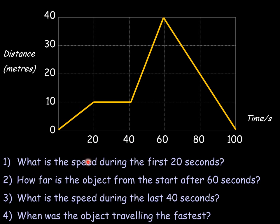Here's a typical question you might get. What is the speed during the first 20 seconds? Well, it's going from 0 to 10 in 20 seconds, so it's 10 meters in 20 seconds, so the answer is 0.5 meters per second. The second question here, how far is the object from the start after 60 seconds? You can look up the graph here. 60 seconds, it is a distance of 40 meters away. The third question, what's the speed during the last 40 seconds? Make sure that you're taking the change in distance, so it's going from 60 to 100 in a time of 40 seconds. So it's 40 meters in 40 seconds, so the answer is 1 meter per second.